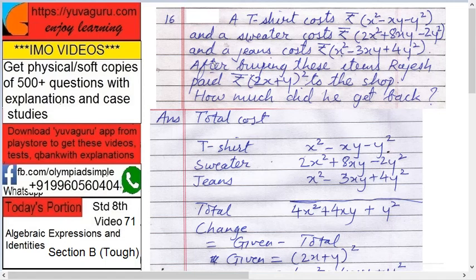A t-shirt costs rupees x² minus xy minus y², a sweater costs rupees 2x² plus 8xy minus 2y², and jeans cost rupees x² minus 3xy plus y². After buying these items, Rajesh paid rupees (2x + y)² to the shop. How much will he get back?